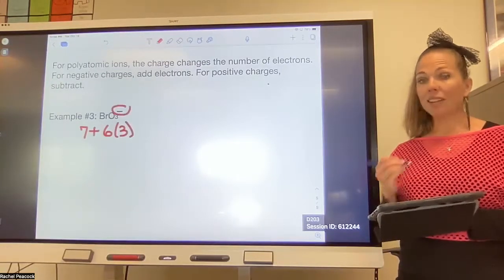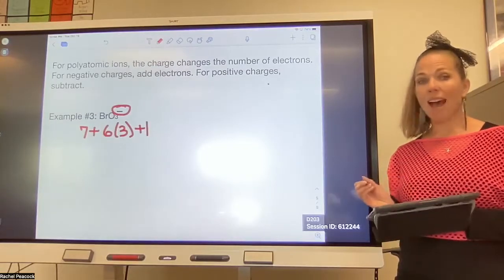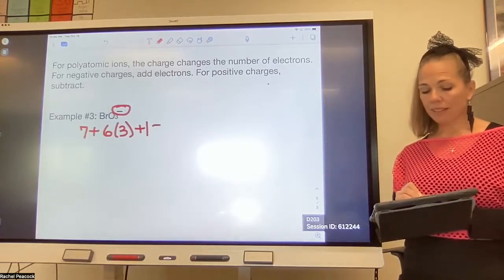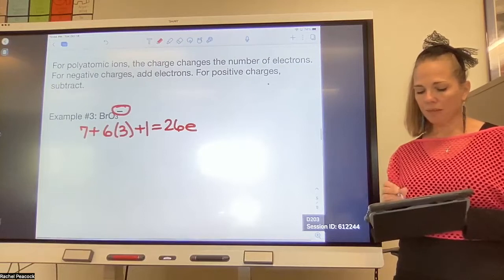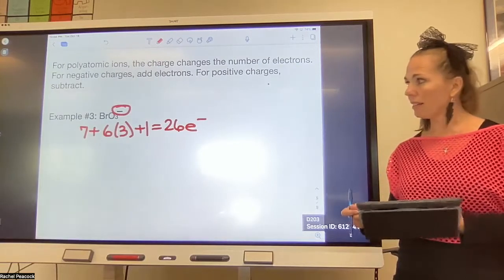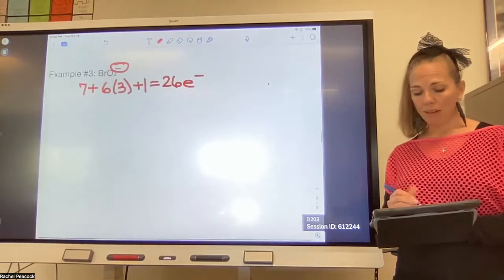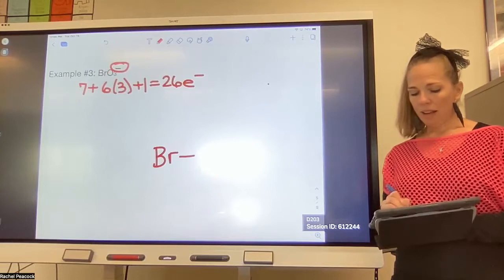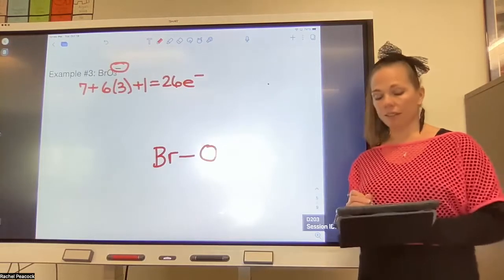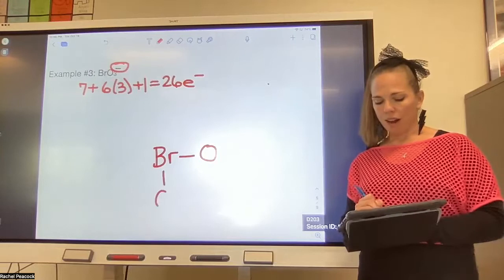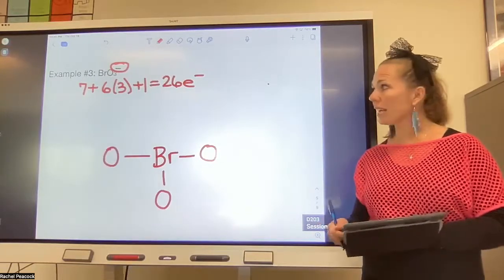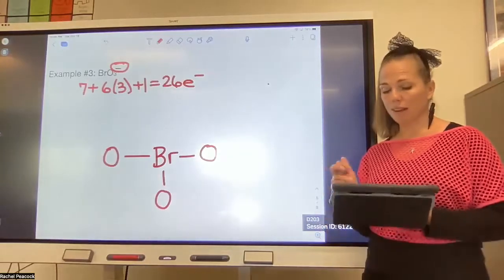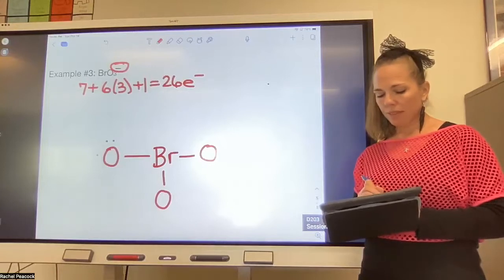Okay, so let's look at how you would do a polyatomic ion: BrO3 minus. Bromine has seven, oxygen has six each, there's three of those, and then this extra negative charge means you need to add an additional electron. So that gives us a total of 26, because seven plus 18 plus one is 26. All right, and you're going to put bromine in the middle, because it's on the left of the formula and it is less electronegative than oxygen. So you're going to attach your oxygens. That's two, four, six.